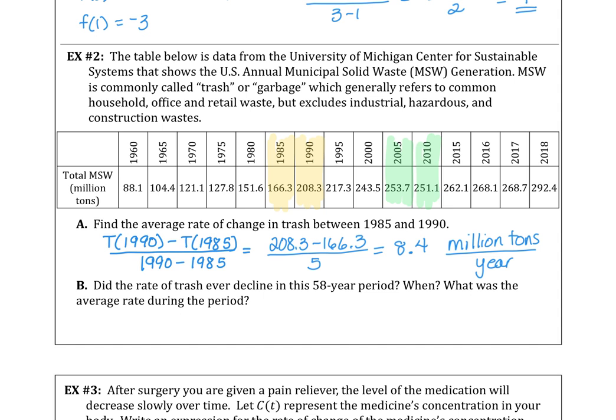So we could answer that yes during 2005 to 2010 the rate decreased, but we need to calculate that rate. Looking between 2005 and 2010 we want the average rate of change, so y2 is 251.1 minus y1 253.7 divided by 2010 minus 2005. Using our calculator, about a half of a million tons per year.